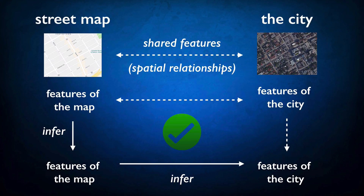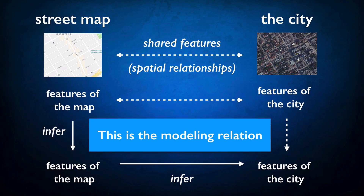Now note that the down arrow on the right that relates features of the city to features of the city is different from the arrow on the left side. In this diagram, I'm using the dotted arrow to represent a relation of inference — it's a bit of logical reasoning. We're not reasoning about the features of the city directly; that's why it's a dotted arrow. We're reasoning about features of the map and using that as a proxy, as a substitute for reasoning about features of the city.